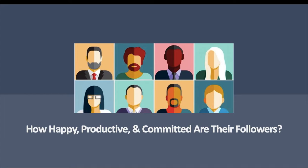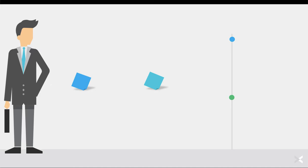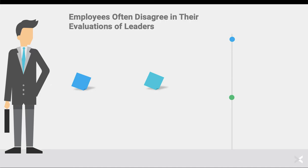When trying to figure out how happy, productive, and committed our followers are, it can be a bit of a task. Any leader is going to have multiple followers, and figuring out how productive and committed those followers are might actually depend on which employees we ask. A leader might have some employees that feel very satisfied, very productive, and very committed, and then also some followers that are less committed, less hard-working, not as productive. So part of the challenge is that we might see some differences in perspectives or perceptions of a leader. This is going to take us into our first theory associated with leadership style and behavior. Researchers saw that employees often disagree in their evaluations of leaders — some think the leader is great and some think maybe the leader is not so great.